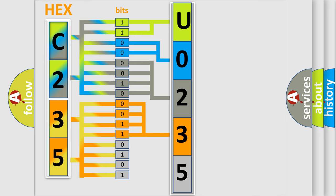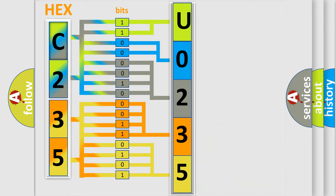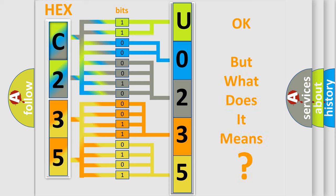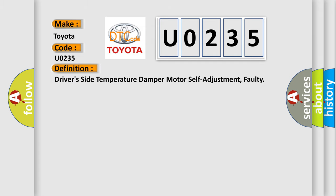A single byte conceals 256 possible combinations. We now know in what way the diagnostic tool translates the received information into a more comprehensible format. The number itself does not make sense to us if we cannot assign information about what it actually expresses. So, what does the diagnostic trouble code U0235 interpret specifically for Toyota car manufacturers? The basic definition is: driver's side temperature damper motor self-adjustment, faulty.